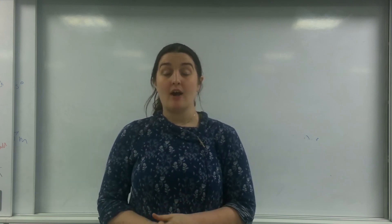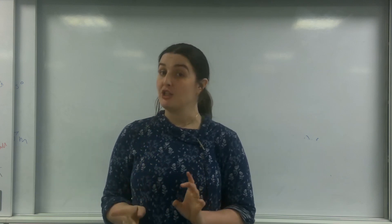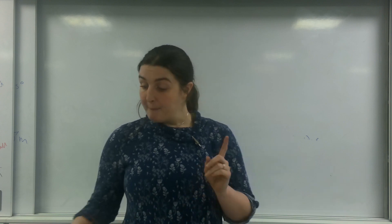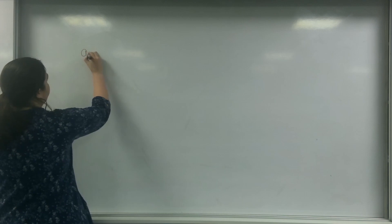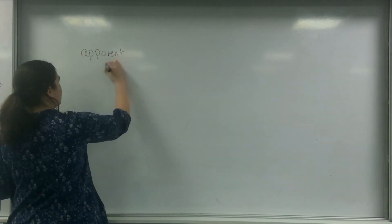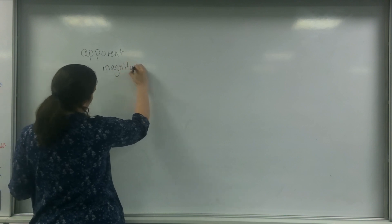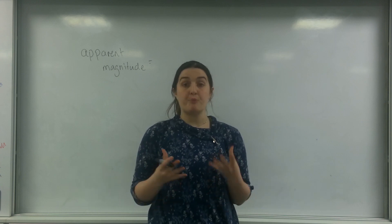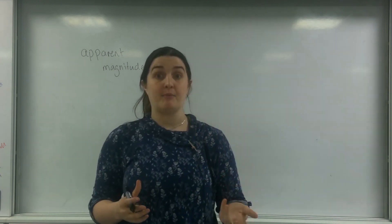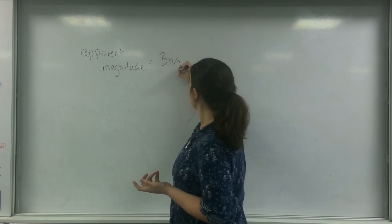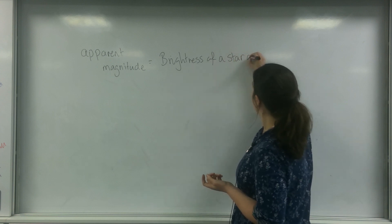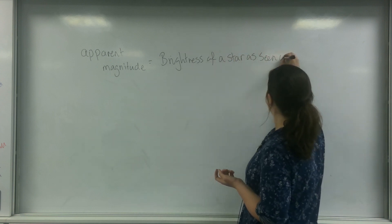Hello and welcome to TL Physics. Today I am going to talk about apparent magnitude. This is a way of classifying stars based on how bright they look. Apparent magnitude is a categorisation of brightness as classified from seeing from Earth — it's the brightness of a star as seen on Earth.